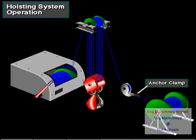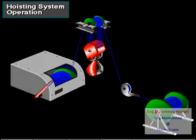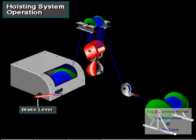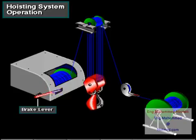They then clamp the line at the deadline anchor. As the driller activates the drawworks to take in line, the traveling block moves up. The driller uses the brake to stop the traveling block at any position. When the driller releases the brake, the force of gravity pulls the traveling block down.